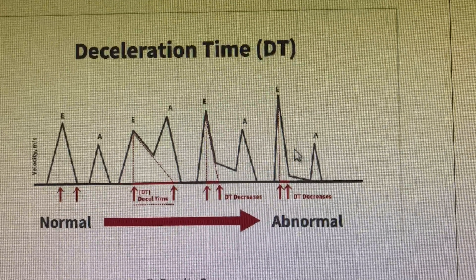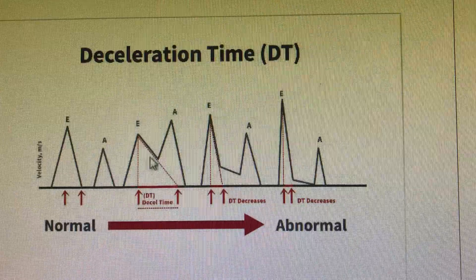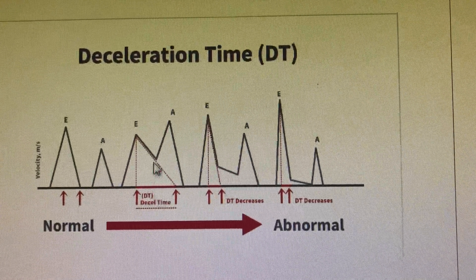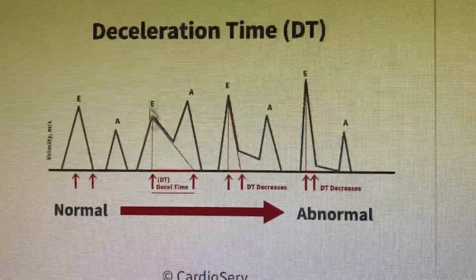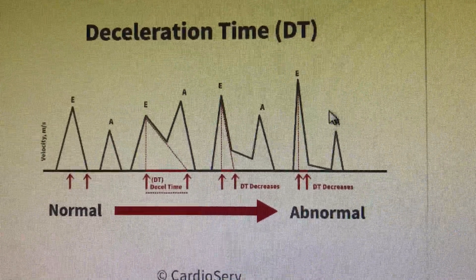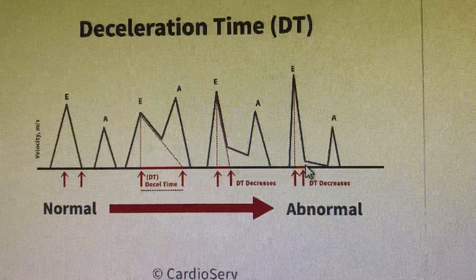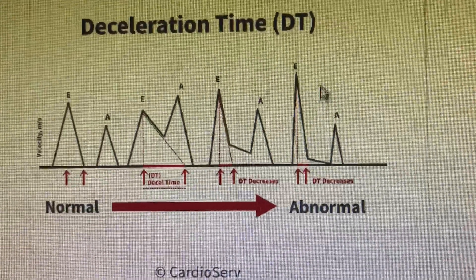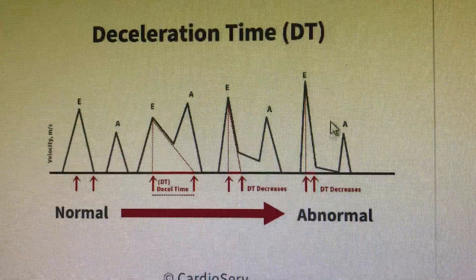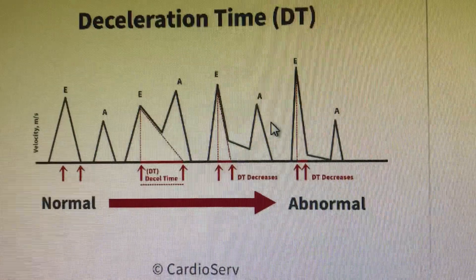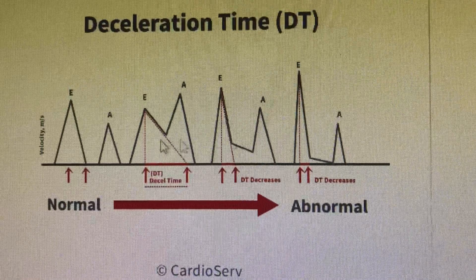In stage 2 and stage 3 diastolic dysfunction, the E and A waves look similar. Only in impaired relaxation — the earliest stage of diastolic dysfunction — will the A wave be higher than the E wave. After that, the E wave will be more than the A wave, and only the deceleration time goes on decreasing. Also, if you take the ratio of E to E', the value will be increasing to more than 14, whereas otherwise it will look similar to a normal E and A pattern.